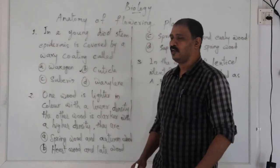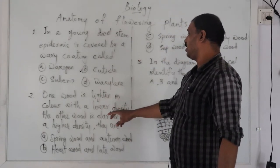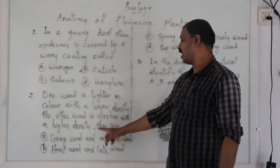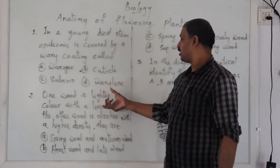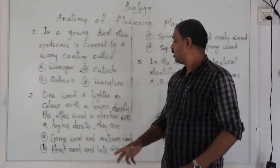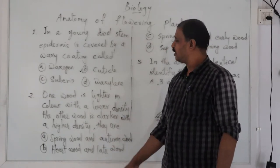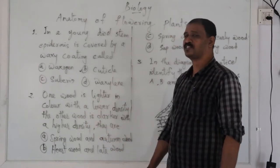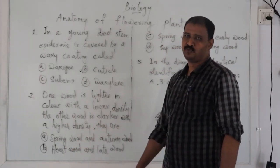Next question: one wood is lighter in color with a lower density, and the other wood is darker with a higher density. The wood that is light in color with a lower density and the darker part with a higher density — this describes spring wood and autumn wood.